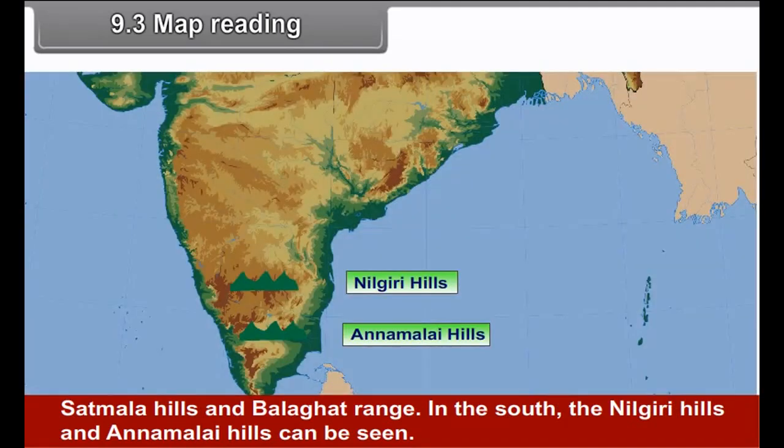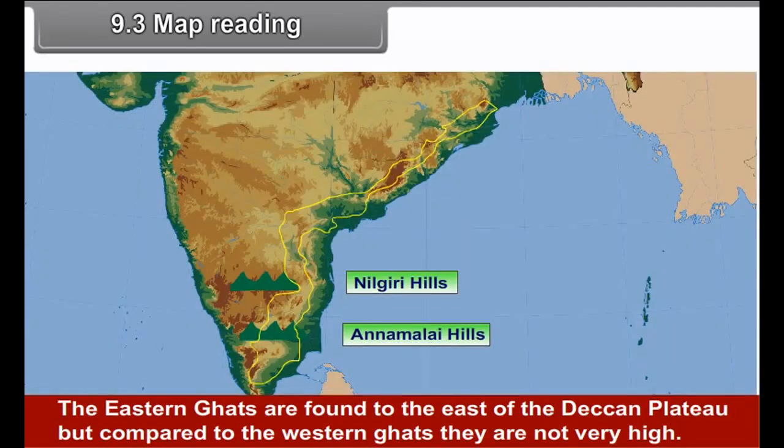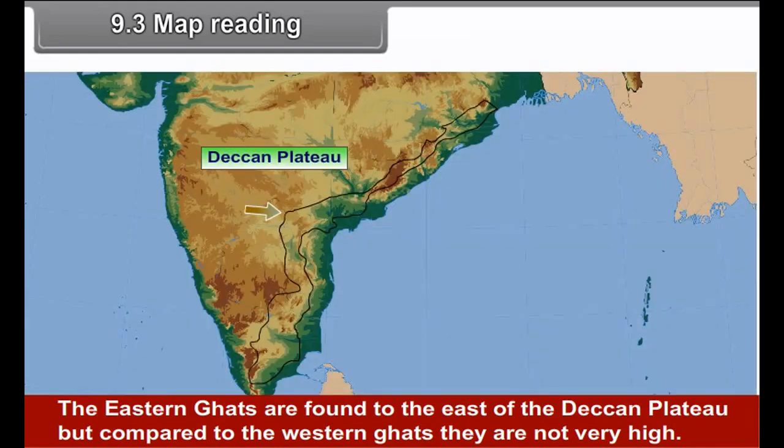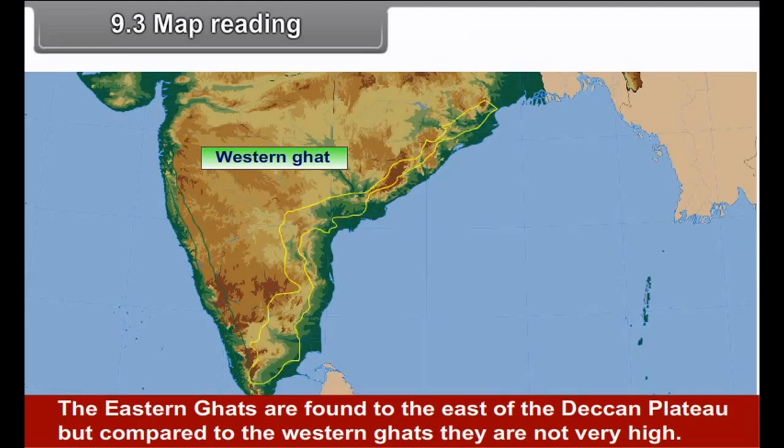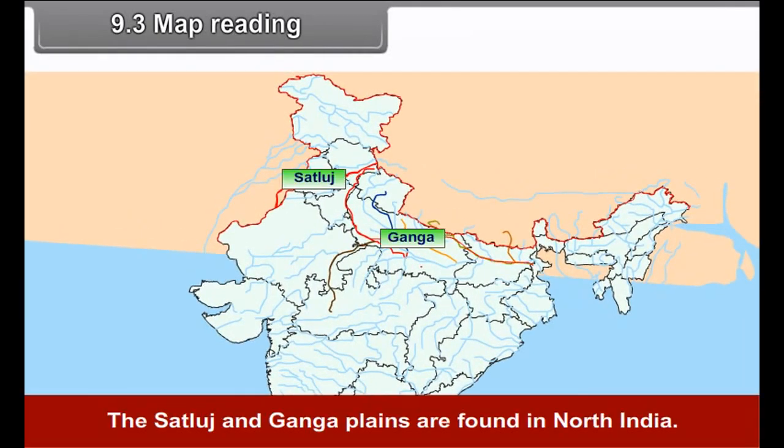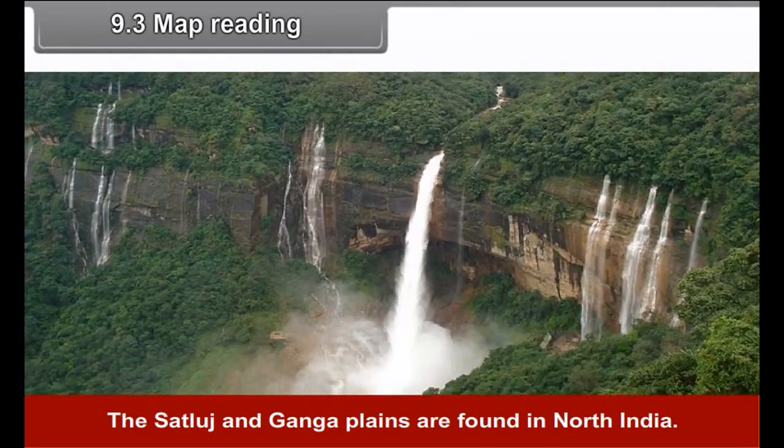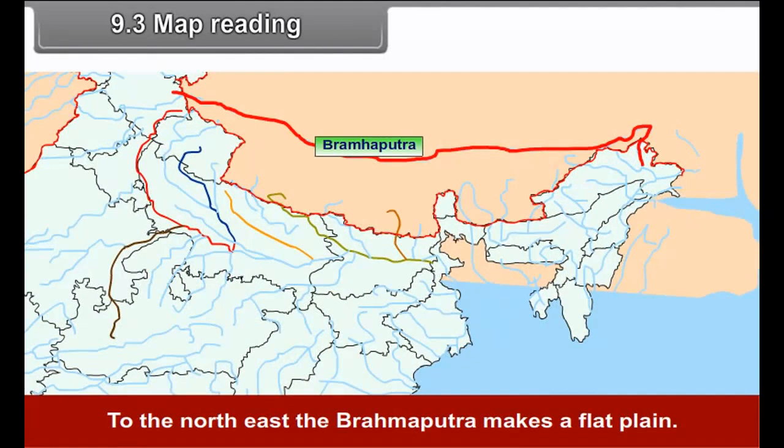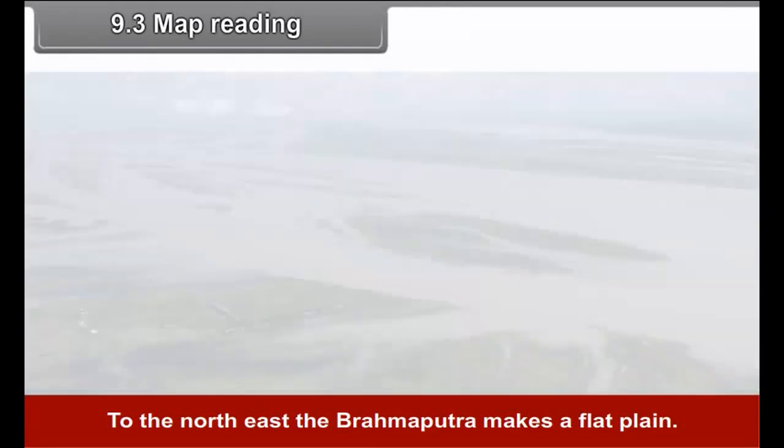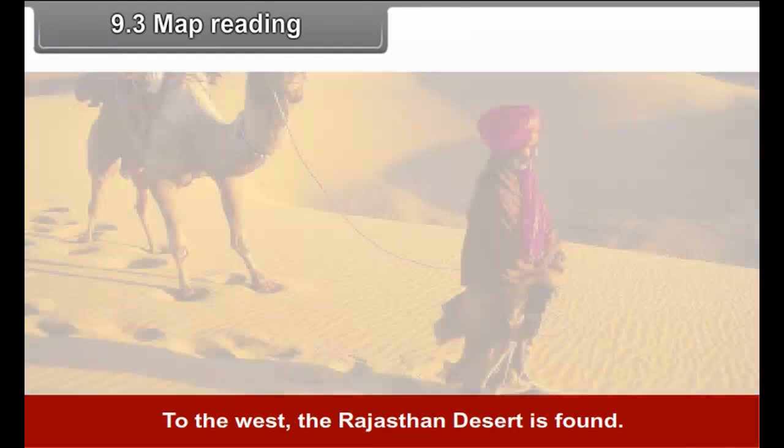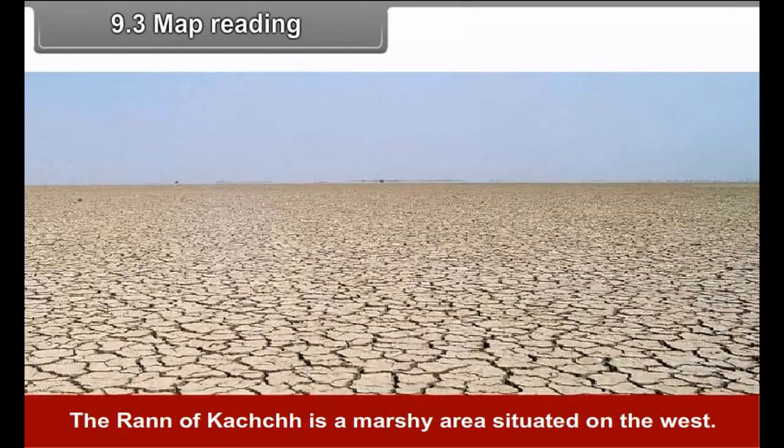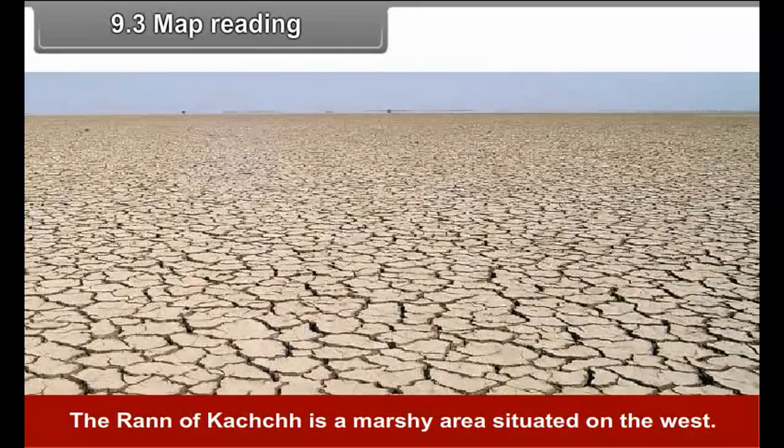In Madhya Pradesh, the Vindhya ranges run in a west to east direction and the Satpura range runs almost parallel to them. The Western Ghats run along the coast from north to south with offshoots like Ajanta, Satmala hills and Balghat range. In the south, the Nilgiri hills and the Anamalai hills can be seen. The Eastern Ghats are found to east of the Deccan Plateau, but compared to the Western Ghats, they are not very high.